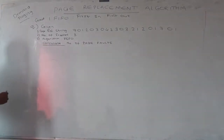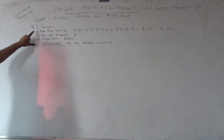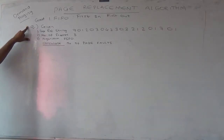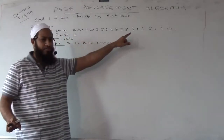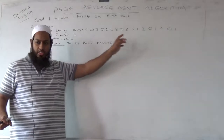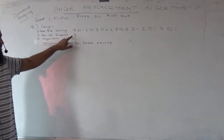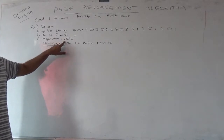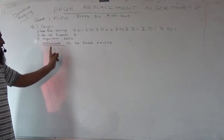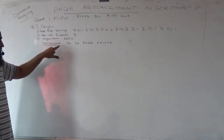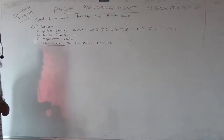So first, which page will I get into memory? I'll just recap. This is a question which will come to you in your exams. They will give you the page reference string — the reference string of a number of pages, so there are 20 pages in all. Then they'll give you how many frames there are: 3. And then the algorithm which you need to use to solve this — the algorithm is FIFO, First In, First Out. And what you have to calculate — if this answer is right, you get full marks — is the number of page faults.